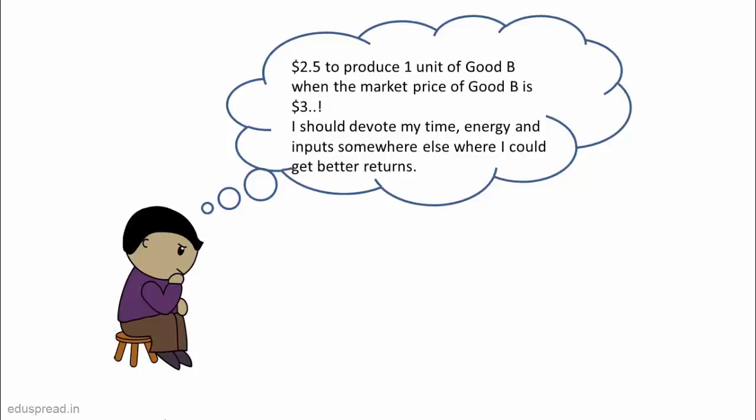Now if the cost of producing Good B rises from $1.5 to $2.5, do you think the seller will keep on supplying the same amount of Good B? No, because it's not worth it for him to devote the same amount of time, energy, and other inputs to produce Good B. So he will reduce the production of Good B and start using his inputs somewhere else where he could get better returns.